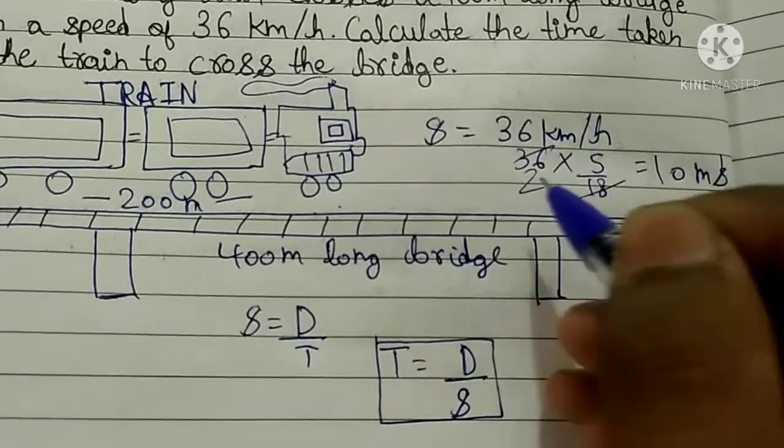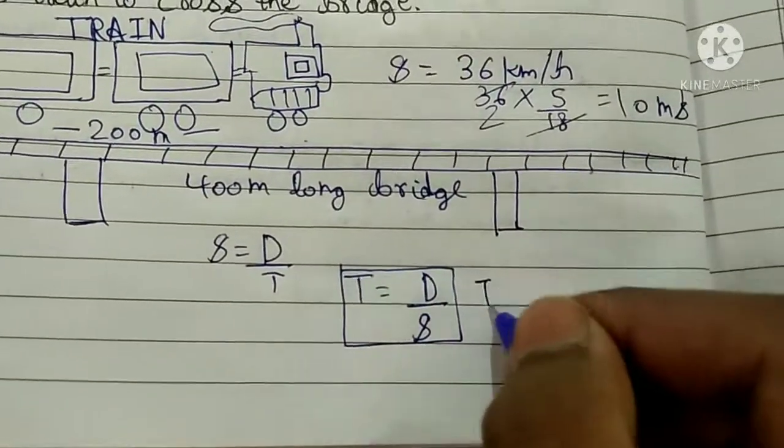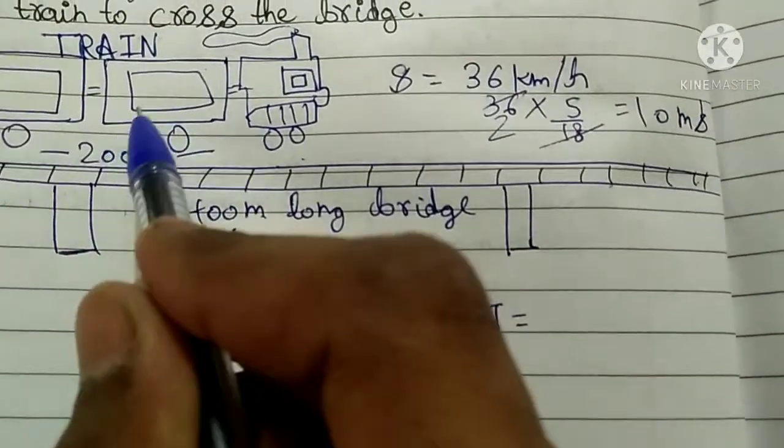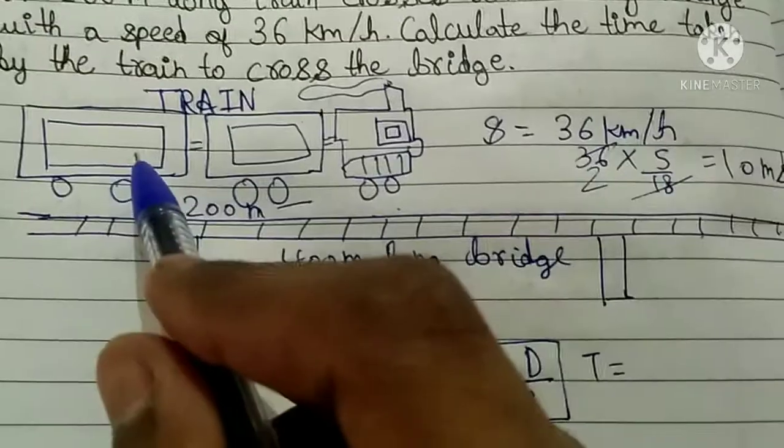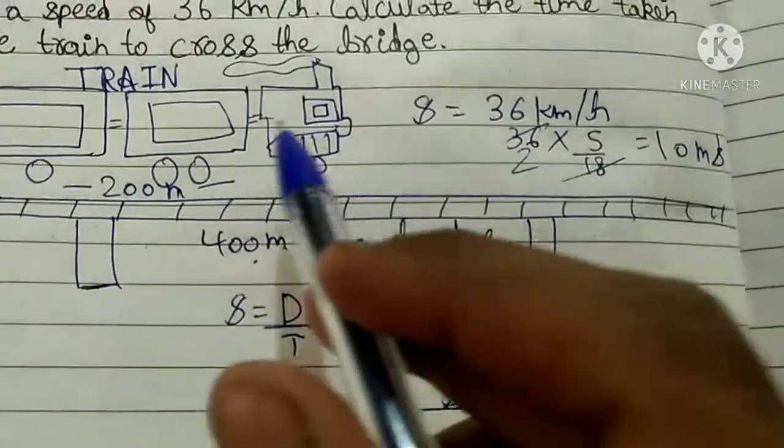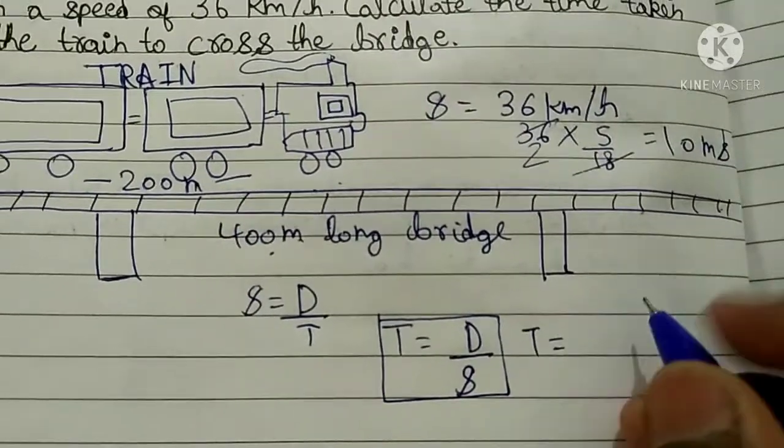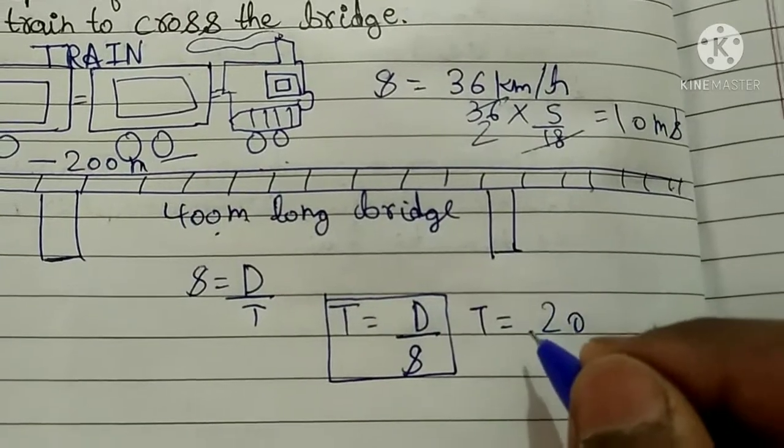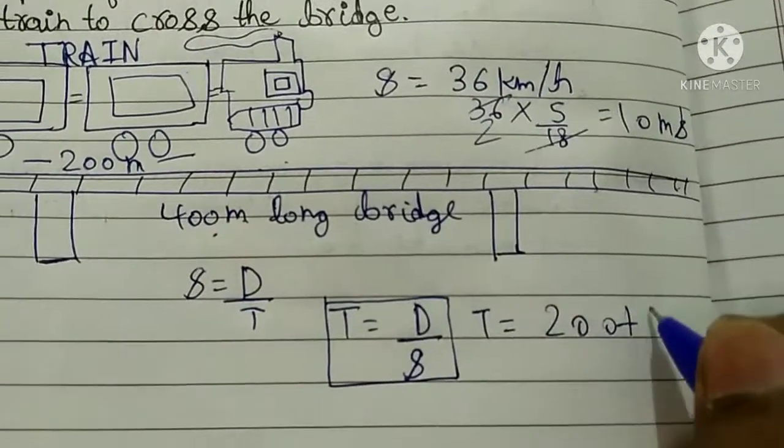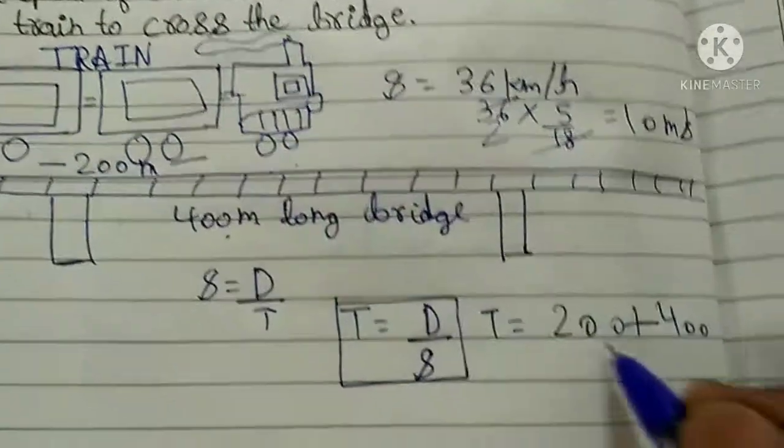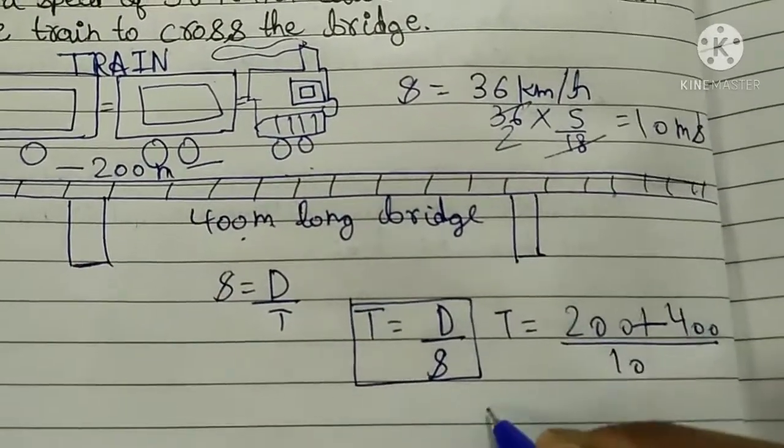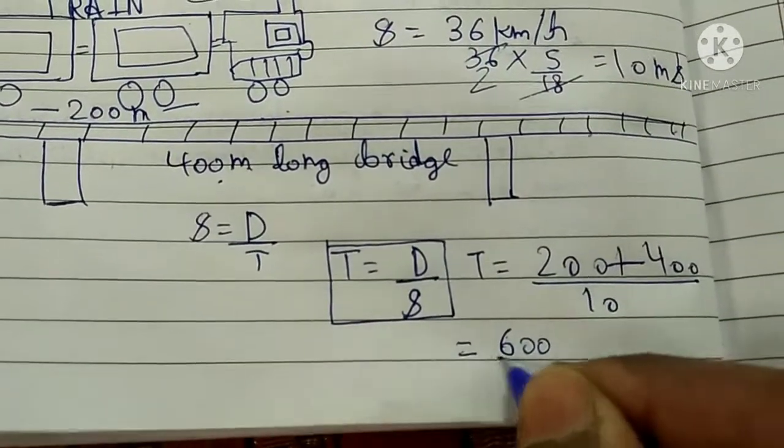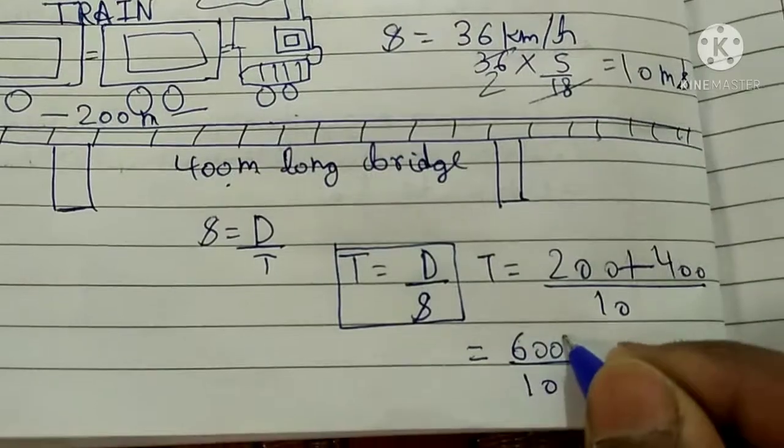So then T is equal to distance. Distance here is 400 meters for the bridge plus 200 meters for the train, because the train fully crosses after the last car passes. Time will be equal to distance upon speed. Distance will be 200 plus 400 bridge length and train length upon 10 speed. This equals 600 upon 10, so the zeros cancel and this will be 60 seconds.